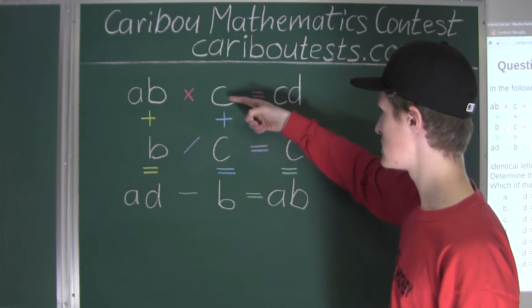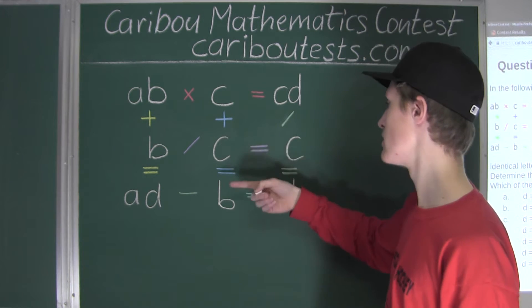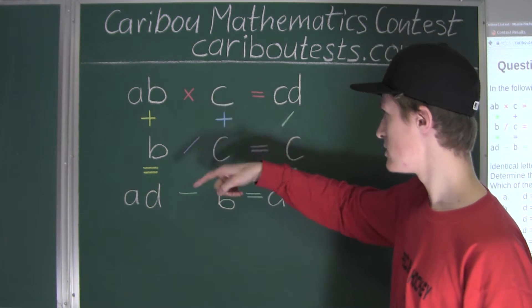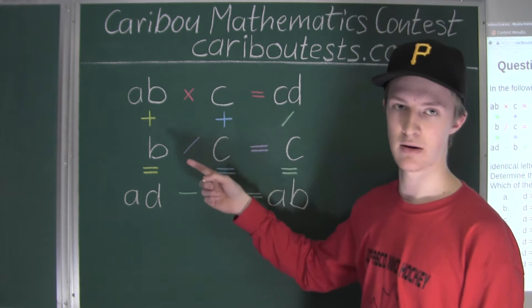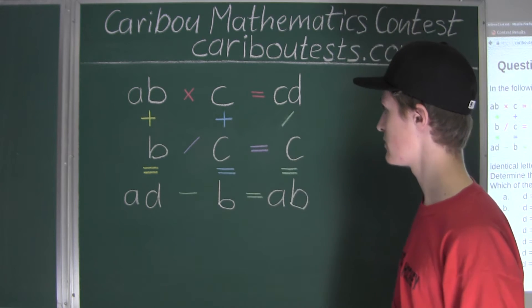And likewise here, with C plus C is equal to B, again we only have two different unknowns, which are B and C. In all the different equations, there are at least three different letters, so we will just look at these two equations for now.